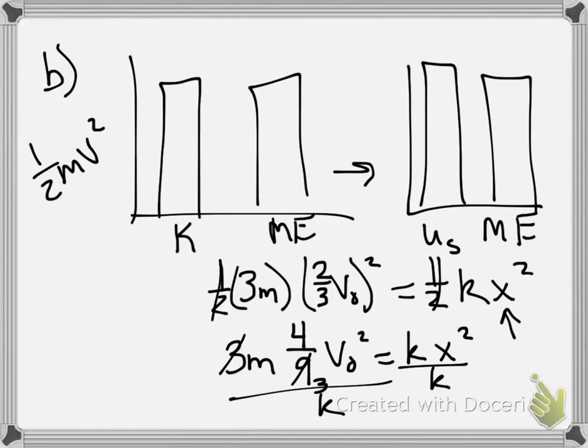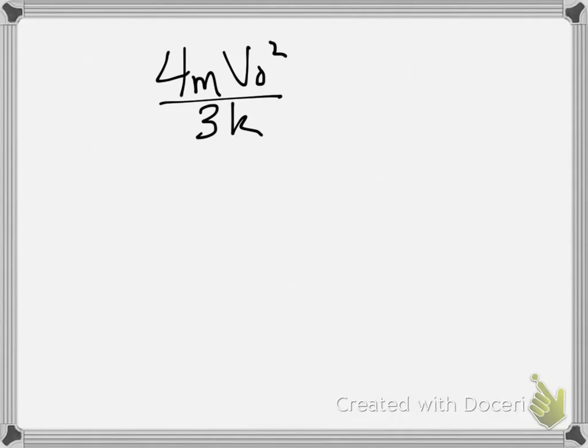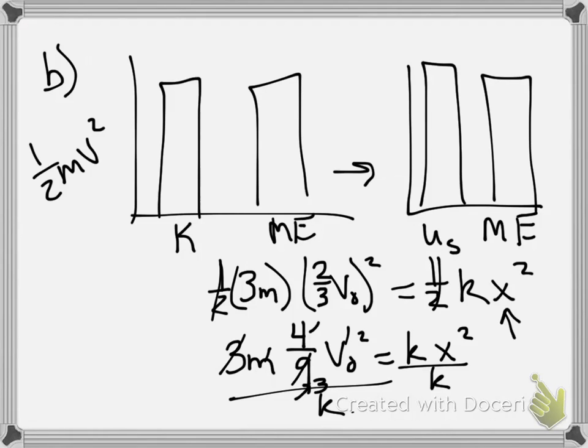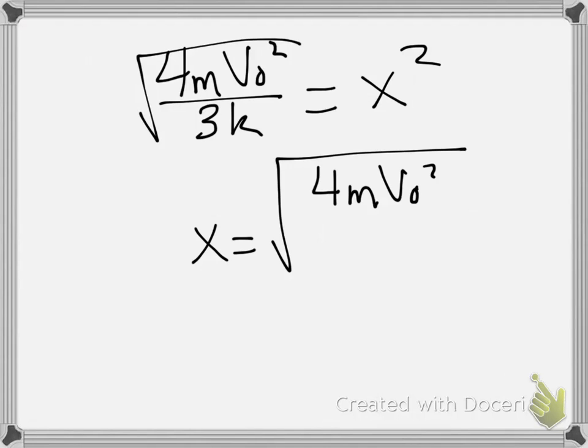So, I'll be flipping back and forth for a second. What do we have left? We have 4M V0 squared, right? 4M V0 squared over 3K, right? Because we have the 3 from that and we have the K from that. And that equals X squared. Well, we can't really leave it as X squared, so we'll have to do the square root of it. So, X is the square root of 4M V0 squared over 3K.